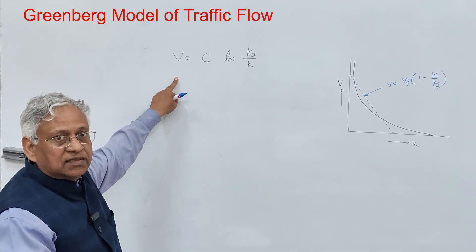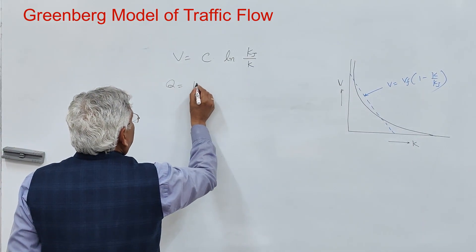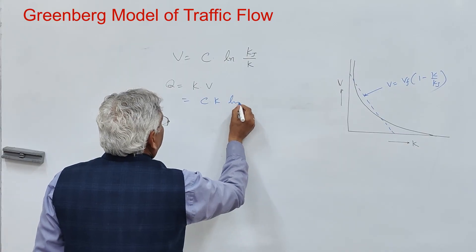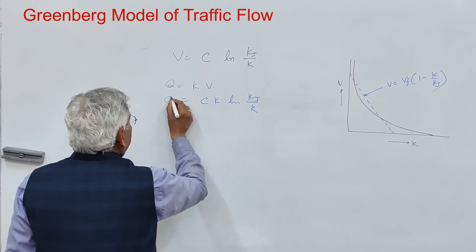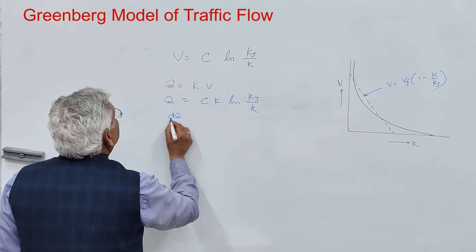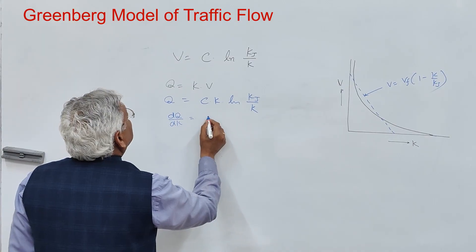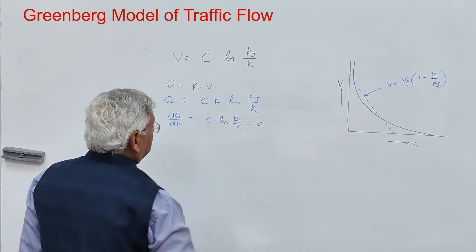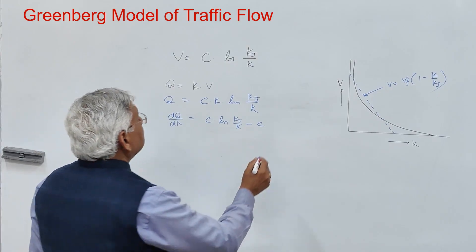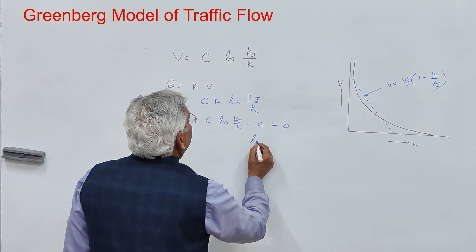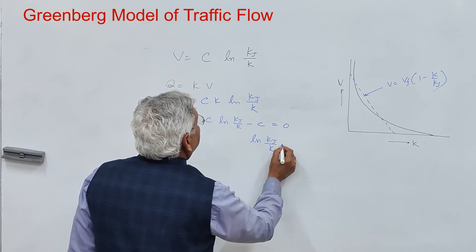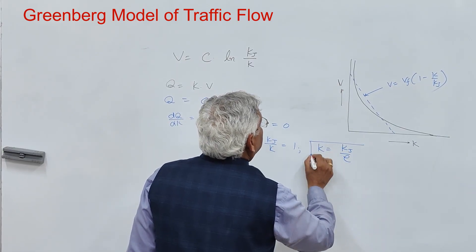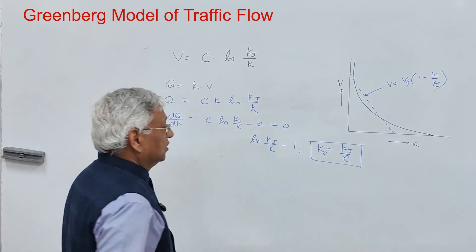You can use this equation to find capacity. Since q equals k times v, we get q equals c times k times ln(kj/k). Differentiating with respect to k gives c times ln(kj/k) minus c. For maximum flow this derivative equals zero, so ln(kj/k) equals 1, meaning the optimum density k equals kj divided by e.